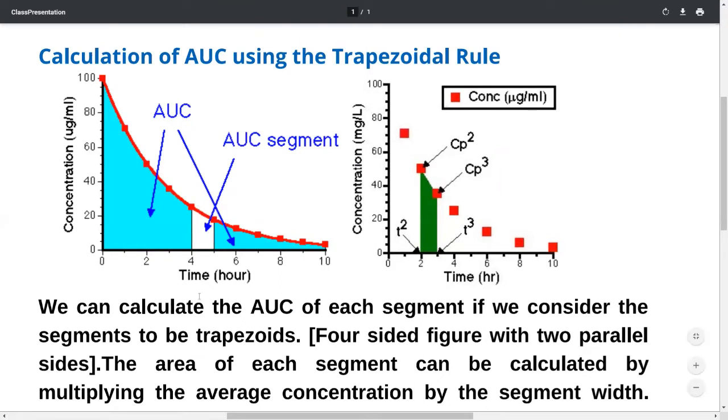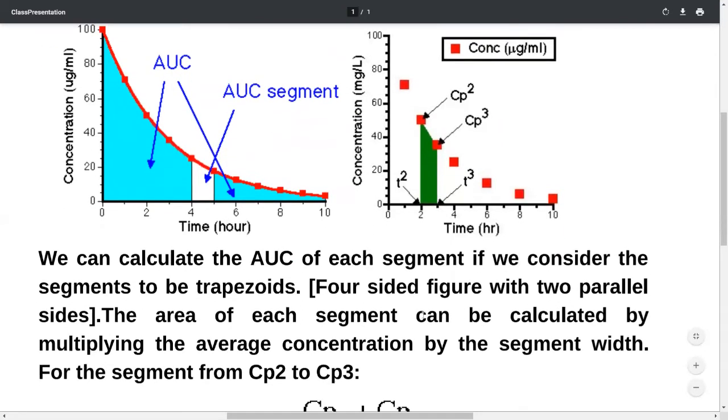The area of each segment can be calculated by multiplying the average concentration by the segment width. We need to calculate the average concentration of this particular area and then multiply by the width.